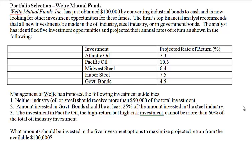The second guideline forces us to put at least some money into government bonds. The way we ensure this is to tie the amount in government bonds to the amount that goes into the steel industry. So if you put $10,000 into the steel industry, then you are forced to put at least $2,500 into the government bonds.